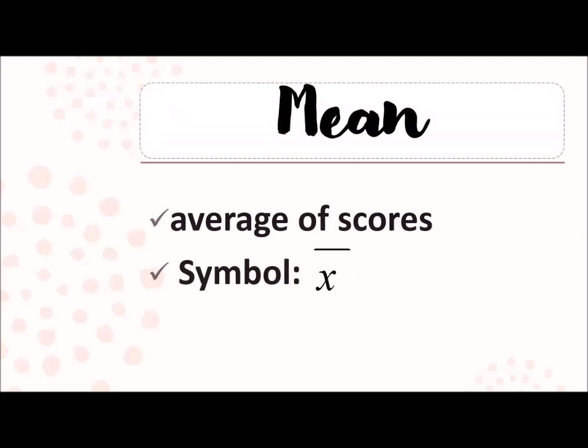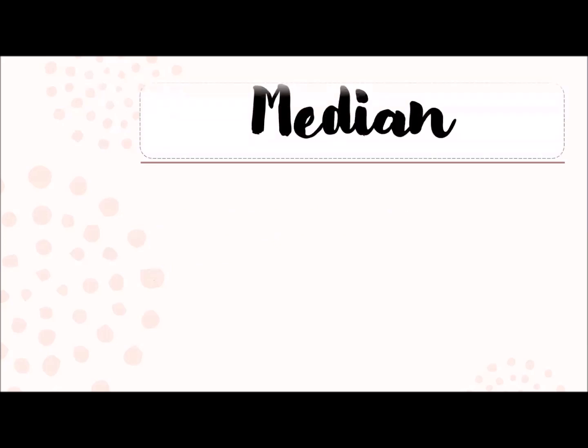So the first one is mean. When we say mean, the keyword here is the average. Now as we get the average of all scores, we need to add up all the gathered scores divided by the number of those scores. And then the symbol here is a small letter x with a bar on top of it.